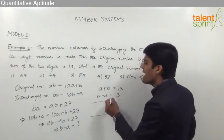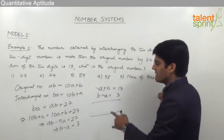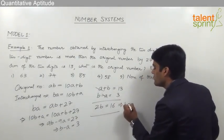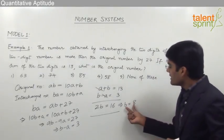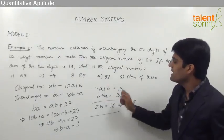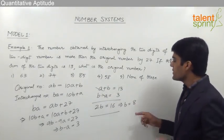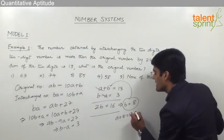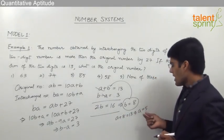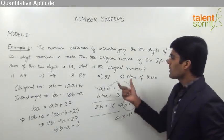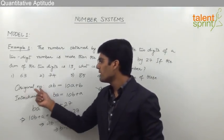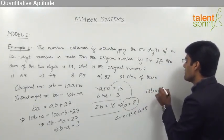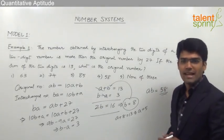Adding both equations: A and minus A cancel out, giving 2B equals 16, so B equals 8. Substituting B equals 8 into the first equation: A plus 8 equals 13, so A equals 5. Since the original number is AB, with A equal to 5 and B equal to 8, the original number is 58. So option 4, 58, is the correct answer.